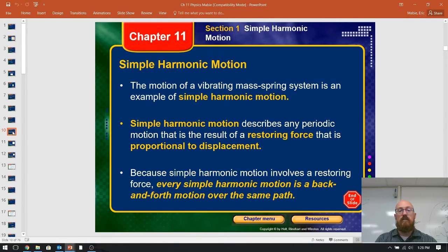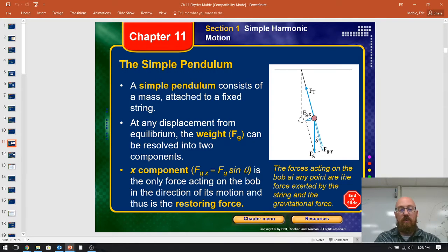So simple harmonic motion. So my mass spring system, that's one. Then the pendulum is the other. So simple harmonic motion, anything that has that motion back and forth. It's got a restoring force. So that second bullet, the restoring force is equal to the displacement from the origin.